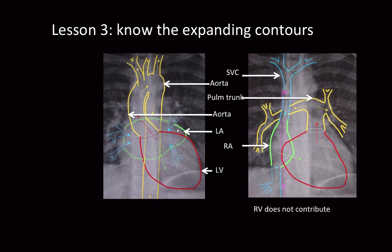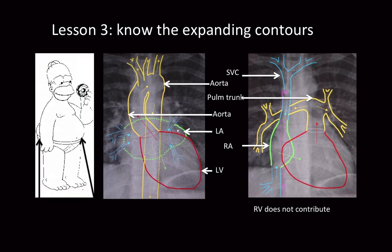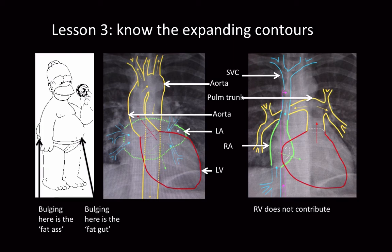If you know which organ or part of an organ is situated in a particular position, you can never make a mistake. I'll show you a picture of Homer Simpson — Bart's father. If we noted a bulging in the anterior part of Homer's silhouette, we'd know this is his abdomen. If we noted a bulging on the back, we'd know that's probably his bum getting bigger as he eats the donuts. We don't need to ask which organ is enlarging because we know the organs that contribute to each part of Homer's outline. It's the same with the cardiac margin — if the left cardiac margin bulges, that's probably the left ventricle.